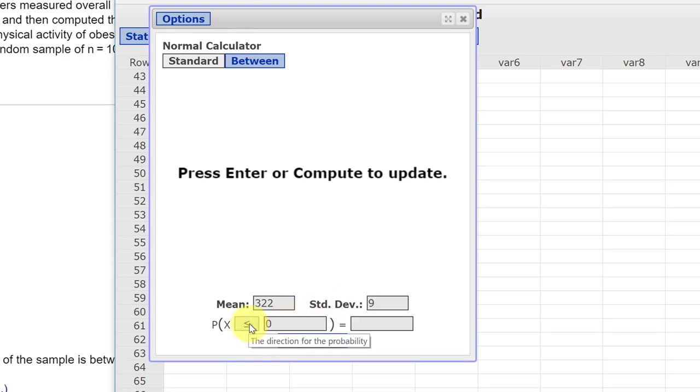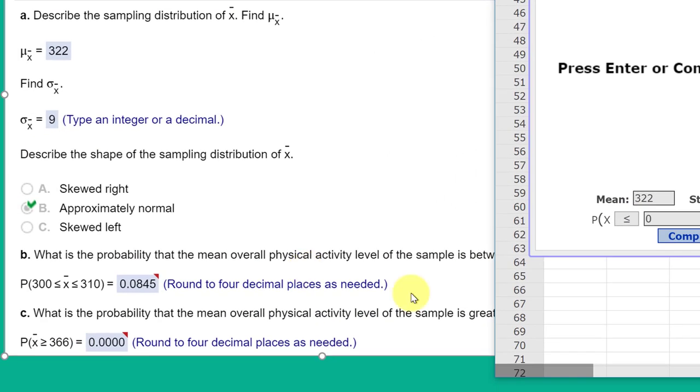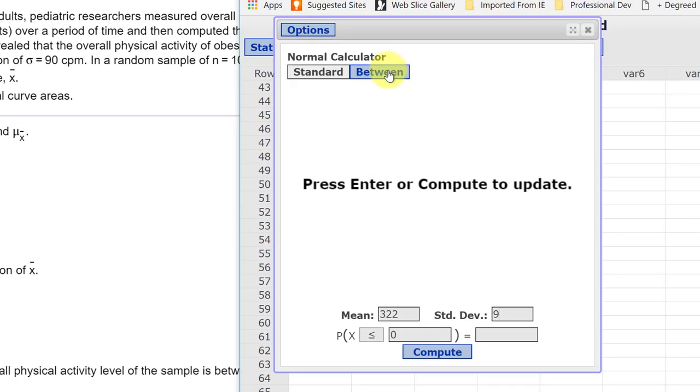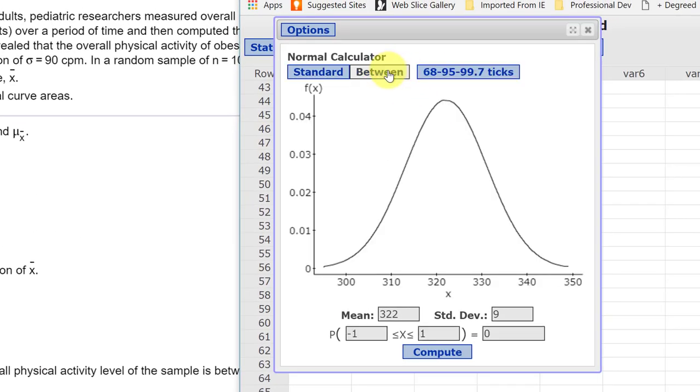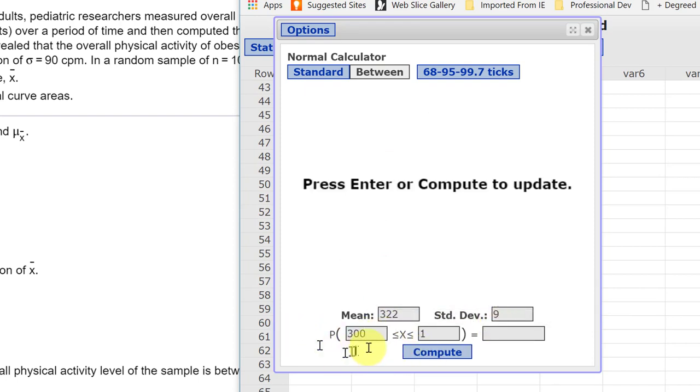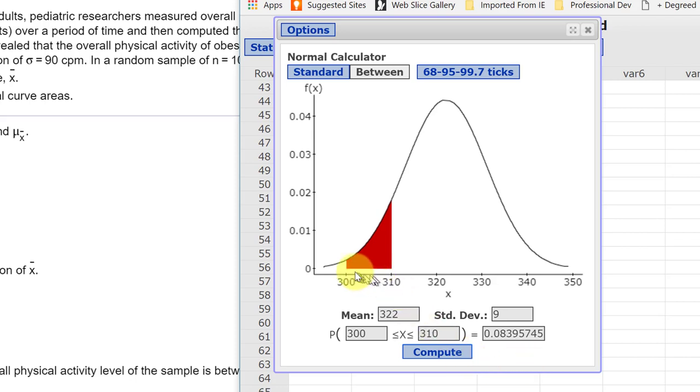And the first thing we want is the probability that the mean physical activity is between 300 and 310. The calculator has a neat little between button. We click on that. The mean and standard deviation don't change. And we just enter our 300 and our 310. Click Compute and we get a probability of 0.084. The probability between those two values you can see it right there, the red area.